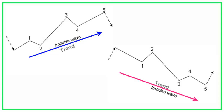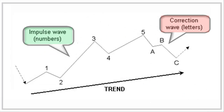In this figure you can see that an impulse wave consists of 5 waves: 3 in the direction of the up-trend or down-trend — waves 1, 3 and 5 — and 2 against the trend — waves 2 and 4. The correction wave consists of 3 waves: A, B and C.